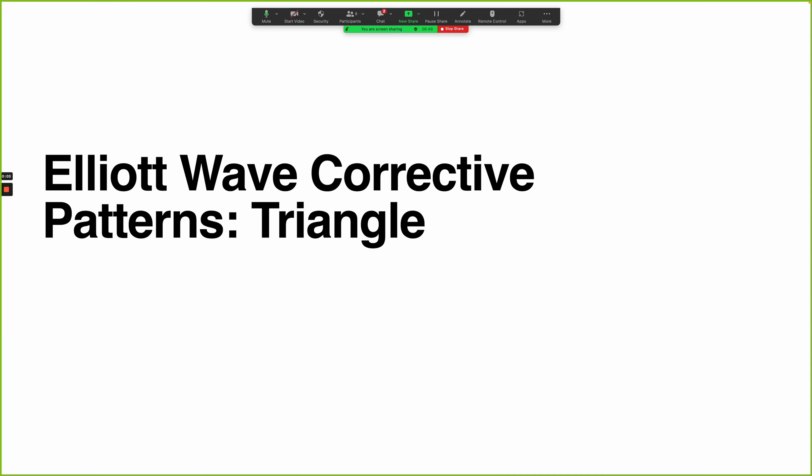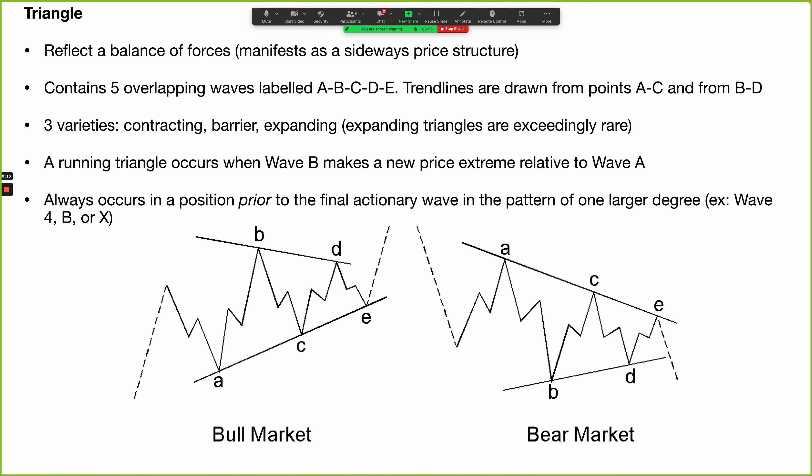Triangles are a corrective pattern, one of the five core Elliott wave patterns. They reflect a balance of forces and typically manifest as a sideways price structure. They contain five overlapping waves labeled A, B, C, D, and E, drawn using two trend lines.